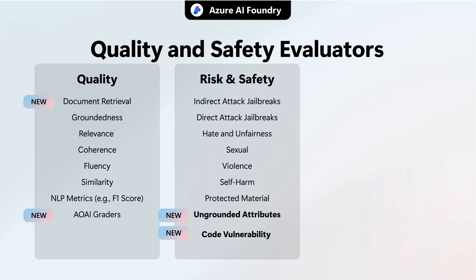Azure AI Foundry's Evaluation SDK provides a rich suite of metrics designed to assess both the quality and safety of your AI agents' outputs. Safety checks scan for problematic content, from violent or sexual material to attempts at jailbreak or protected data exposure. Quality evaluators focus on fluency, relevance, hallucination detection, and grammar accuracy. Agents need extra care because their responses involve dynamic interactions that must stay reliable and safe, helping you deeply understand agent behaviors and enforce responsible AI practices consistently.